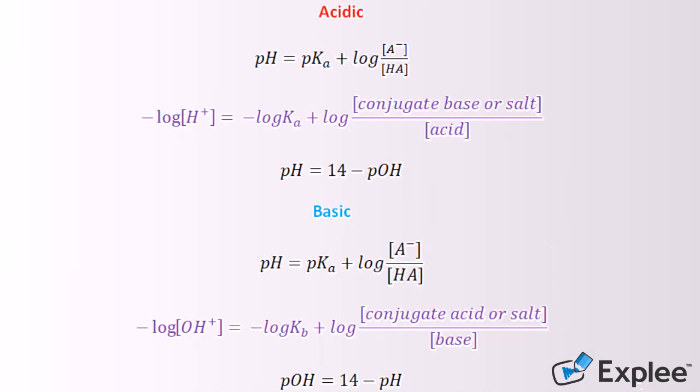pH can only be used with pKa and A minus over HA, and pOH can only be used with pKb and HB plus over B. Do not be confused with which to plug in the equation or with which values to use.